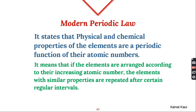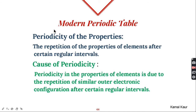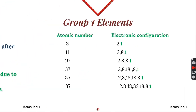According to modern periodic law, physical and chemical properties of elements are a periodic function of their atomic numbers. If we arrange elements according to their increasing atomic numbers, properties will be repeated after regular intervals, and this repetition of properties is called the periodicity of properties. The cause of periodicity is the repetition of the outer electronic configuration after certain regular intervals.